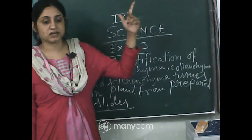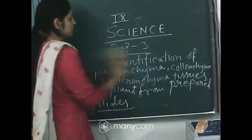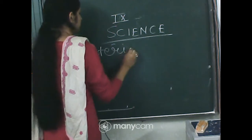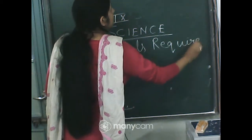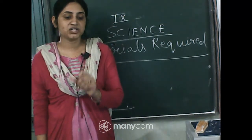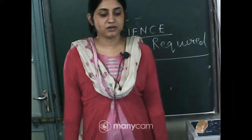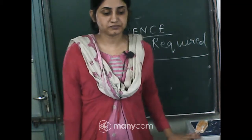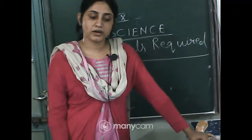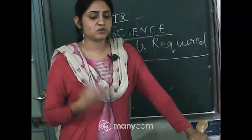When you do the previous practical — that is the preparation — there must be at least 5 marks. Materials required: number 1, permanent slides of plant tissues; number 2, microscope. The microscope is most important in each and every practical because you have to see what you have done.